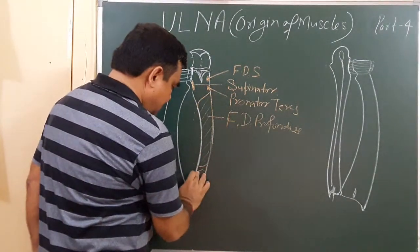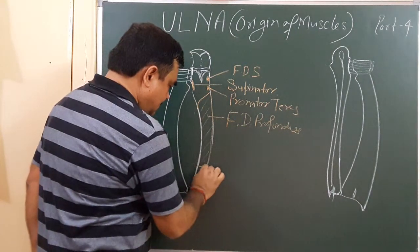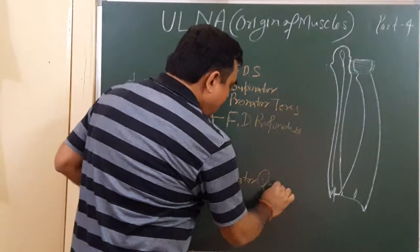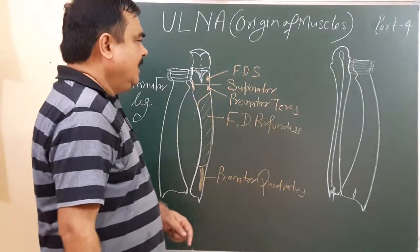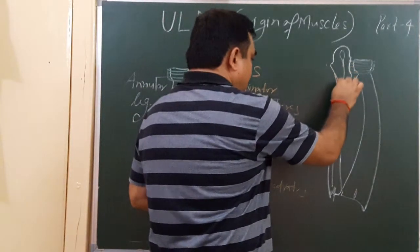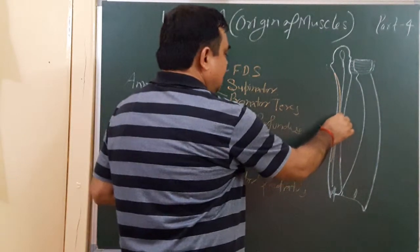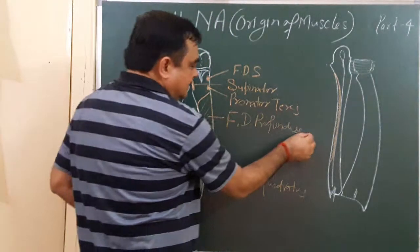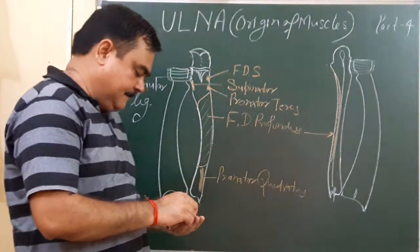This is pronator quadratus. Another muscle... this is the medial surface, the posterior view of the ulna. Here flexor digitorum profundus arises from this area.